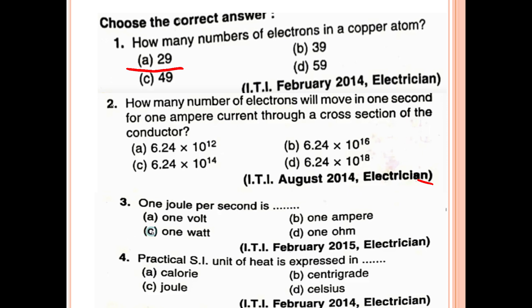How many number of electrons will move in one second for one ampere current through a cross section of the conductor? In every one ampere current, which number of electrons flow? The answer is 6.24 into 10 raised to 18.